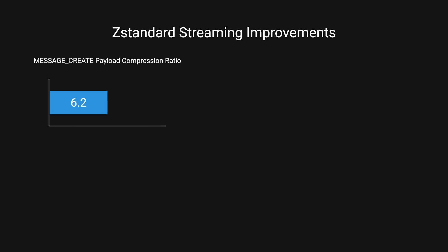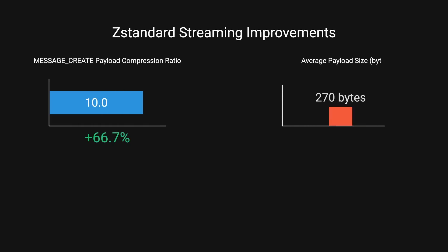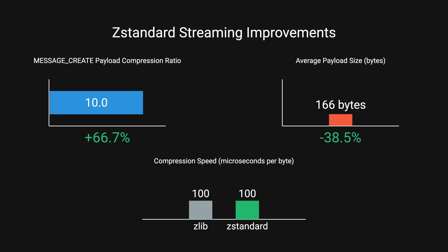After experimenting with streaming, they re-ran their experiment and the results improved quite a bit. For message create payloads, the compression payload ratio increased from 6 to nearly 10. Average payload size decreased from 270 bytes to only 166 bytes, and the compression speed improved, with ZStandard taking 45 microseconds per byte compared to Zlib's 100 microseconds.